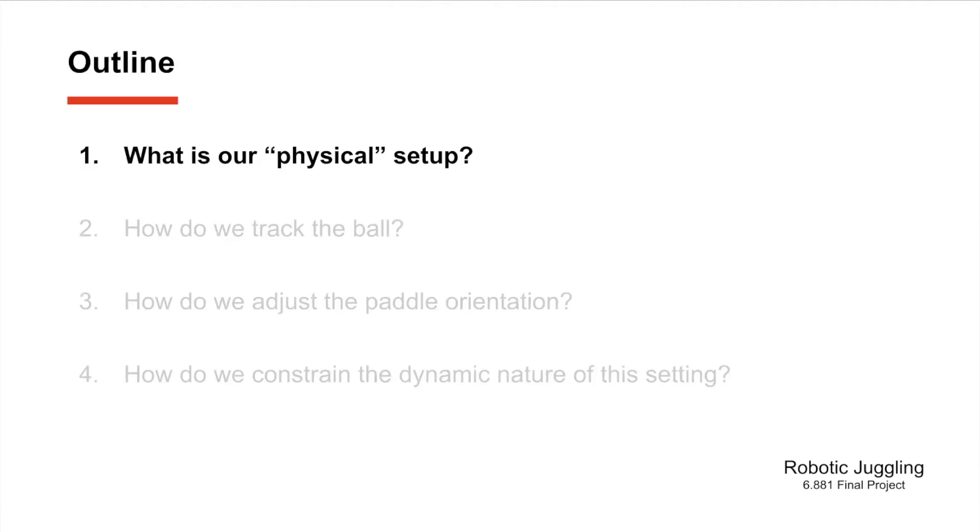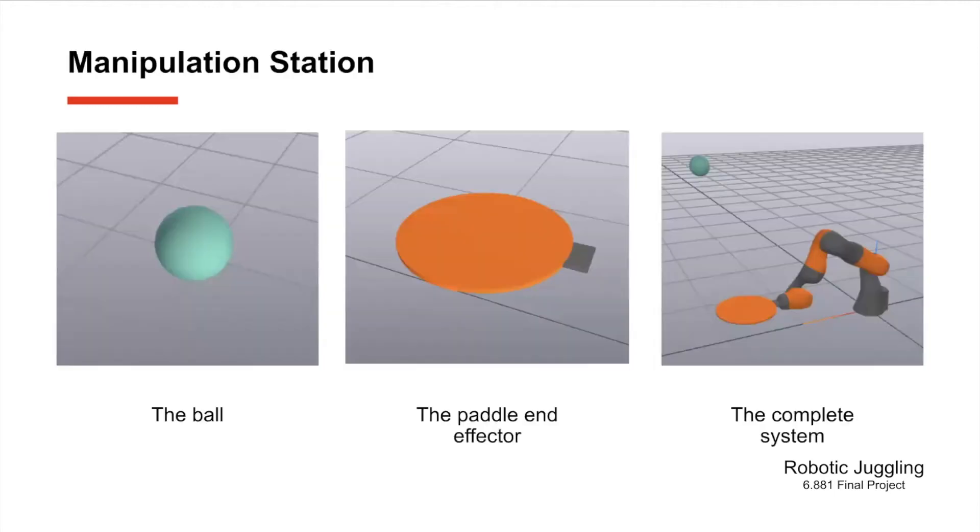So we'll start off with the first one. What was our physical setup? To start off we have the seven degree of freedom Kuka Iwa as you can see over on the right hand side. And what we do to this to modify is weld on a rigid paddle end effector. Further, we have a ball as shown on the left hand side. This is what we use to simulate our environment.